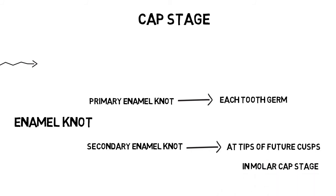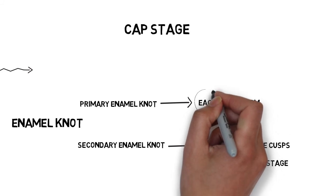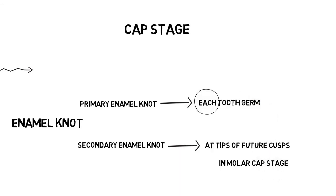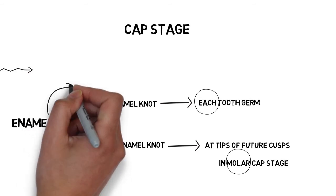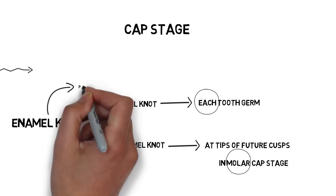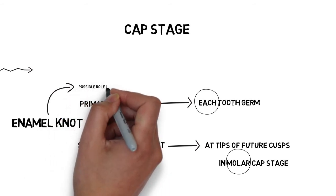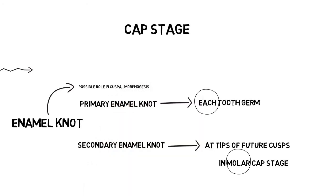To summarize: the primary enamel knot is present in each tooth germ but is not appreciable in histological slides, while the secondary enamel knot is present on the future cuspal tips of the molars and can be seen in the cap stage of molars. The purpose of the enamel knot is not very well understood, but since it appears on the tips of the future cusps of molars, it is postulated to have some role in cuspal formation and maturation of molars.